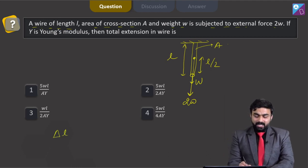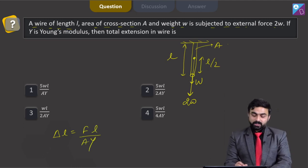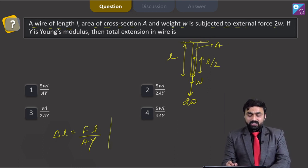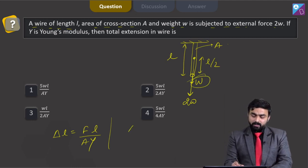We know delta L is equal to F into L over A into Young's modulus. Now, if I need to calculate the extension because of W, that is weight of the wire, so that would be delta L1 is equal to W into L by 2 into A into Young's modulus.